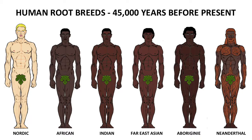45,000 years ago, in India, Far East Asia, and Australia, new breeds emerged — all dark-skinned with dark hair and eyes as pictured. 45,000 years ago there were five distinct breeds: African in Africa, Nordic in northern Europe, Indian in India, Far East Asian in Far East Asia, and Aborigine in Australia.